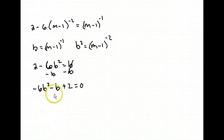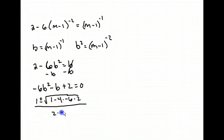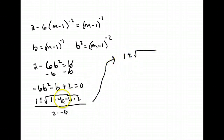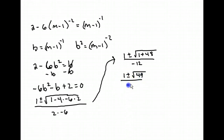Using the quadratic formula, the b coefficient in the middle term is negative 1, so we get: 1 plus or minus the square root of negative 1 squared, which is 1, minus 4 times a times c, all divided by 2a. That comes out to 1 plus or minus the square root of 1 plus 48 — since negative 4 times negative 6 is positive 24, times 2 is positive 48 — divided by negative 12. This gives 1 plus or minus the square root of 49 divided by negative 12.